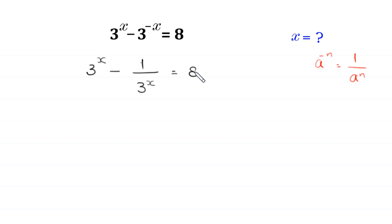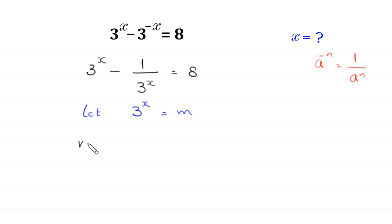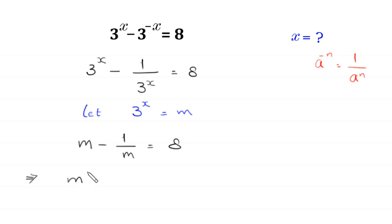Now we suppose that 3 to the power x is equal to m. If we substitute m in this equation, it will become m minus 1 over m is equal to 8. If we multiply both sides by m, this implies that m squared minus 1 is equal to 8m.